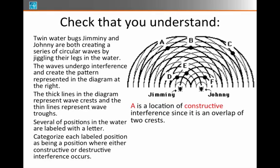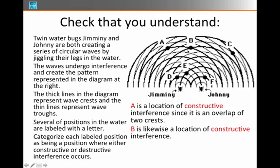A is going to be constructive, because if you notice, the two lines that are meeting here at A are heavy, so that means there are two crests that are overlapping. B is also going to be a position of constructive interference, because it's two heavy lines or crests that are overlapping.